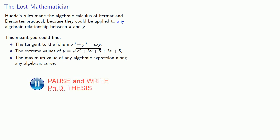Hood's two letters established him as one of the rising stars of mathematics. Unfortunately Hood chose to abandon a promising career as a mathematician and went into politics.